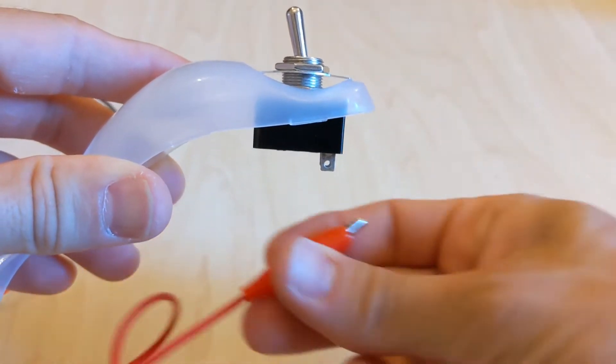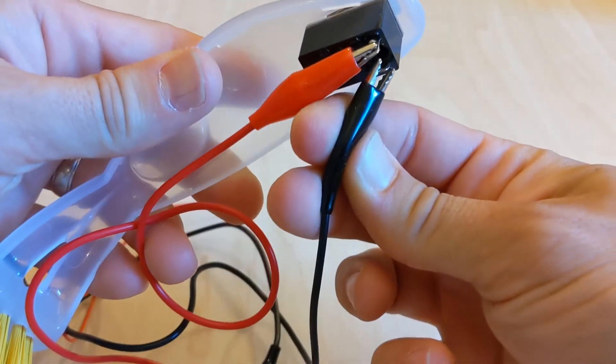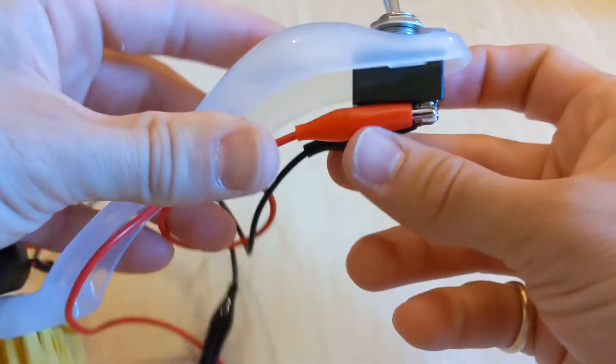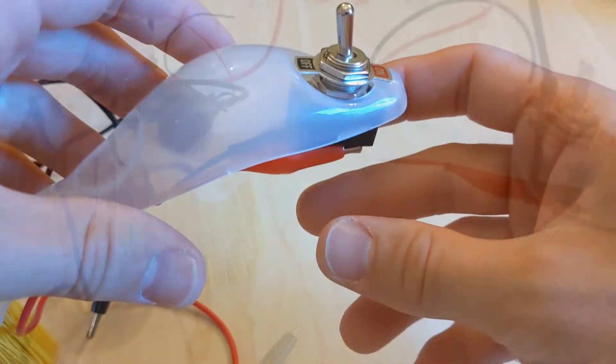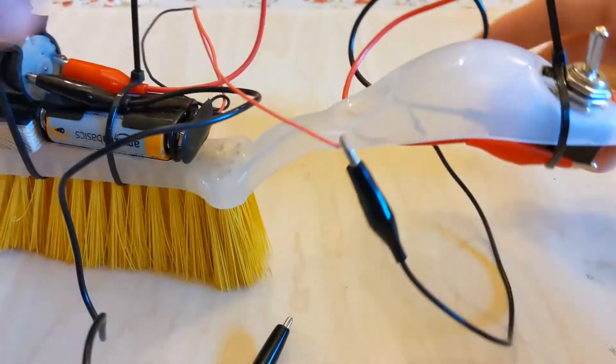Next, attach your crocodile clip wires, one to either terminal on the switch, making sure they're pointing backwards. Then reconnect the crocodile clips to the two terminals to complete the circuit once more.